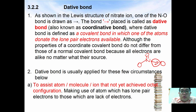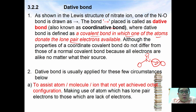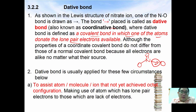A dative bond is also known as a coordinative bond. It is defined as a covalent bond in which one of the atoms donates its lone pair of electrons. The properties of a coordinative bond do not differ from those of a normal covalent bond, because all electrons are alike no matter what their source is.